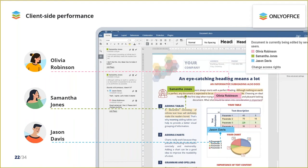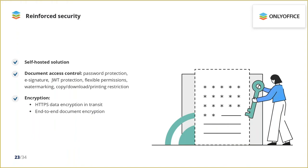Data security is a crucial question for everyone who works with documents online. The source code is open for everyone to examine. You can launch OnlyOffice on your own private network. HTTPS encrypts traffic, JSON Web Token protects documents from unauthorized access, and it's also possible to restrict copying, downloading, and printing. We provide end-to-end encrypted document editing in private rooms where every symbol you type is encrypted using the unbreakable AES-256 algorithm.